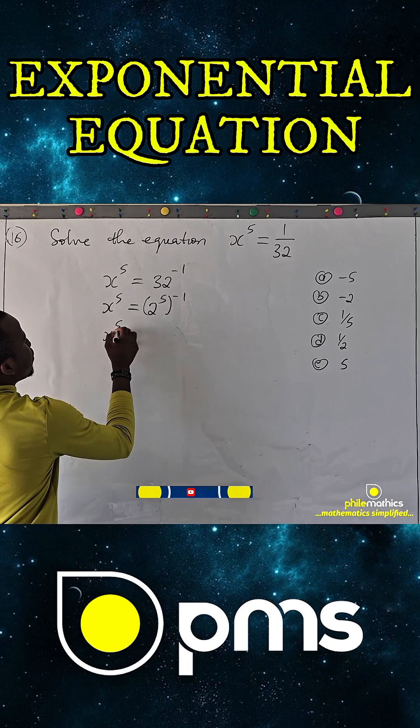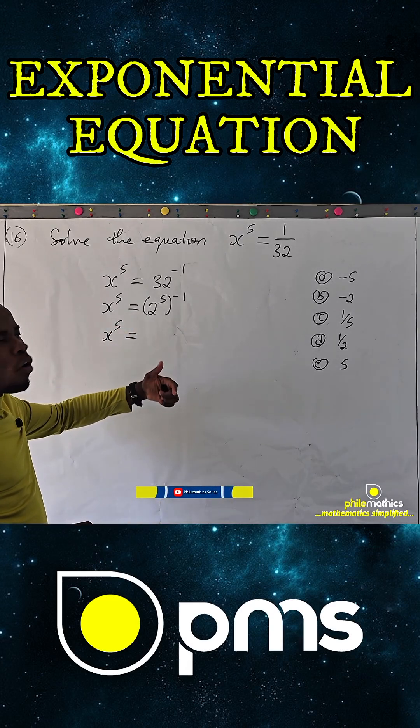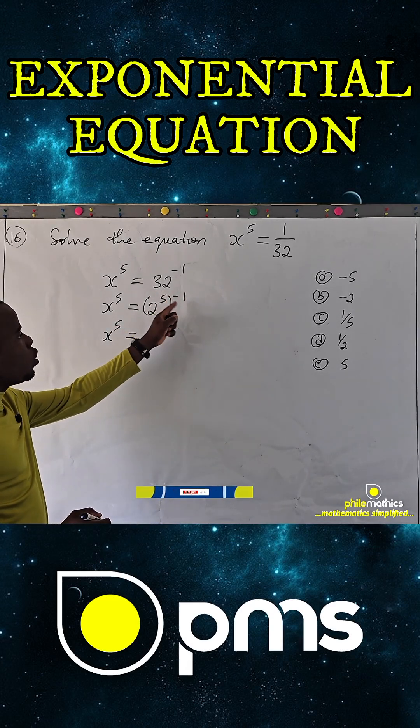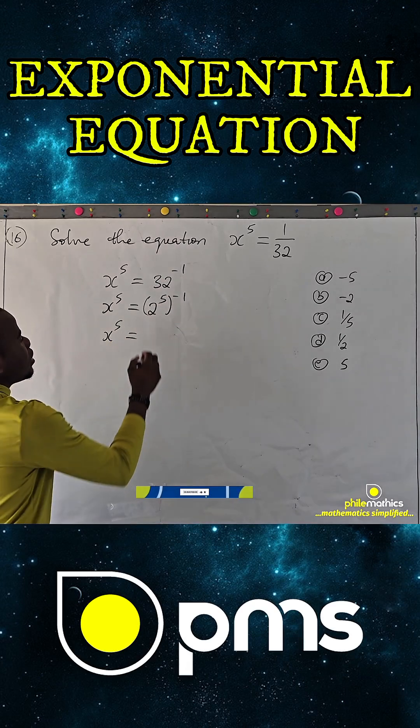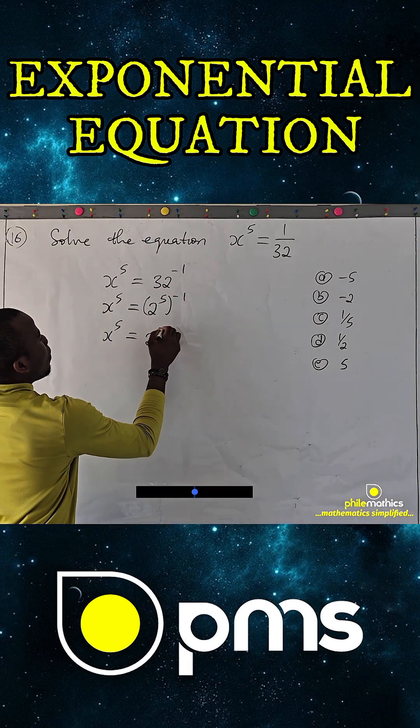x to power 5 simply equals, from the law of product rule in indices, this will multiply, so we have 2 to power minus 5.